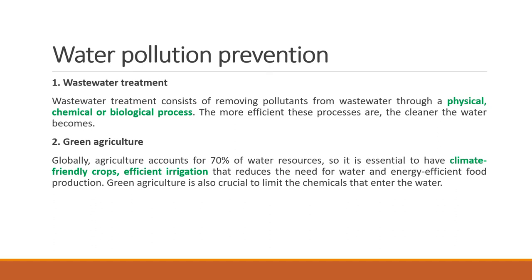Green agriculture is another option. Use organic fertilizers and test the soil quality to determine how many nutrients are already present. By calculating how many extra nutrients a specific plant needs, you add only the required amount of nitrogen and phosphorus — not in excess. Excess nutrients get washed off, reach water bodies, and lead to eutrophication. By using green agricultural practices, we can reduce eutrophication and other related problems.